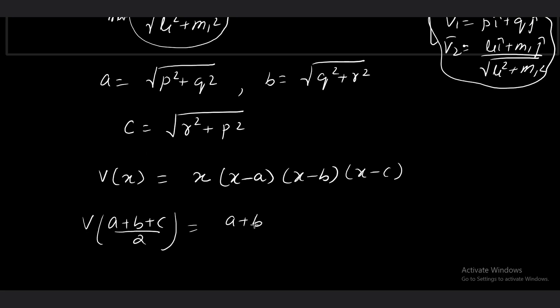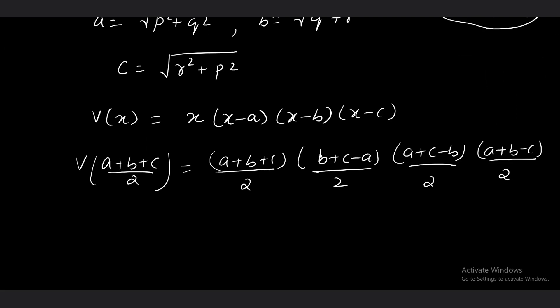What is going to be v(a+b+c)/2? When you keep this value, you get (a+b+c)/2 · ((b+c-a)/2) · ((a+c-b)/2) · ((a+b-c)/2). This is s(s-a)(s-b)(s-c). So we can say this is nothing but area of a triangle having side length as a, b, and c. So v(a+b+c)/2 is nothing but Δ². Δ is area of triangle with side length a, b, c.